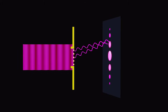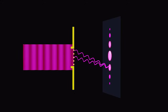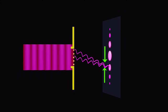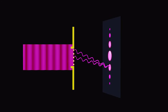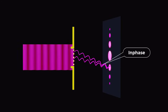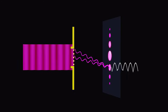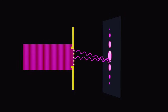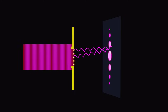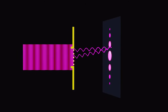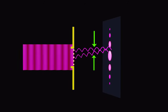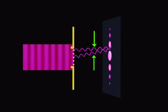The bright bands are regions of constructive interference, where the crests of the waves meet the crests of other waves, meaning the waves are in phase and add together to create a larger wave. For destructive interference to occur, the waves must be out of phase by 180 degrees, meaning the crests of the waves must meet the troughs of the other waves.